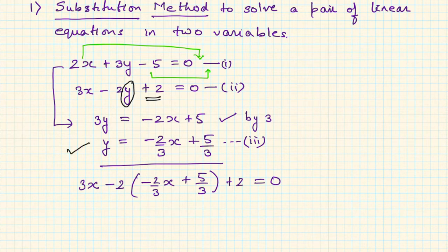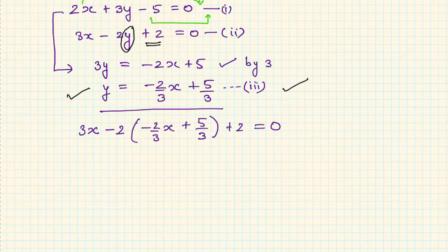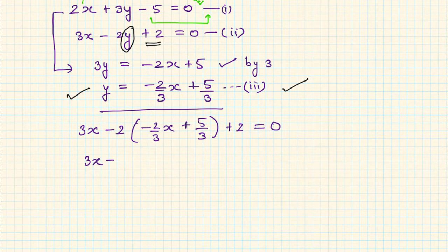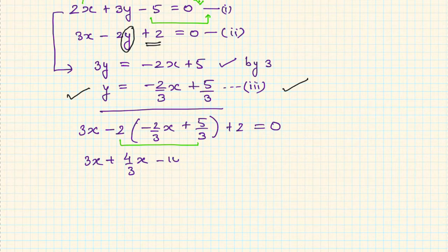If you substitute back into the same equation you derived y from, you'll just get something like 0 = 0, which serves no purpose. So we substitute the expression for y from equation three into equation two. Solving: 3x + (4/3)x - 10/3 + 2 = 0. Now this equation has only one variable, x, and we know how to solve a linear equation in one variable.